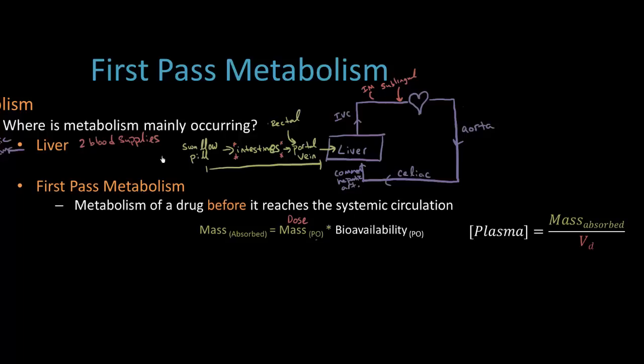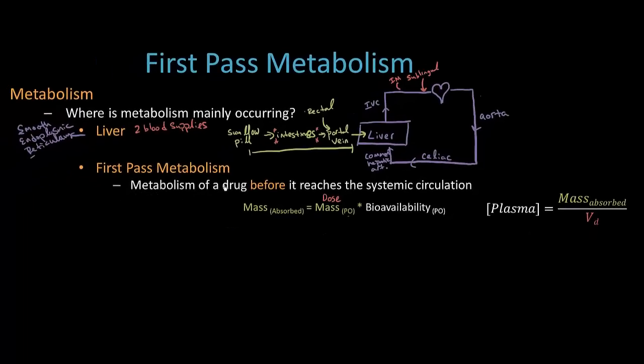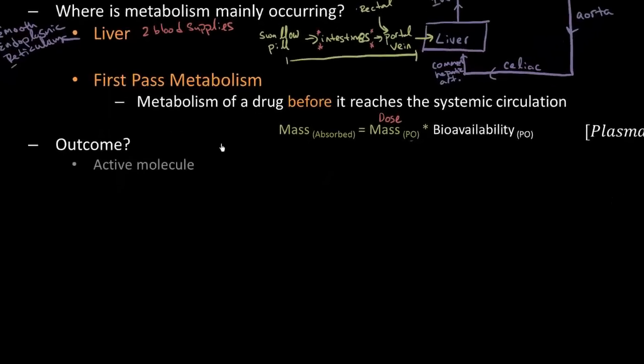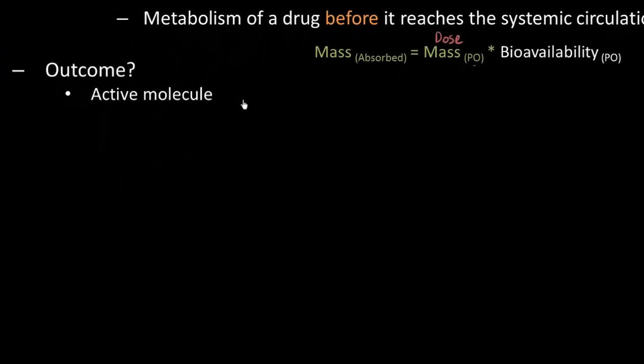Alright, now that we got metabolism and first-pass metabolism down specifically, let's talk about what would happen if I metabolized this drug. What are the outcomes? Well, the first outcome is something you're probably familiar with. We give a drug, it's pharmacologically active and by getting metabolized, this drug then becomes inactive. Inactive and this is the case with most drugs.